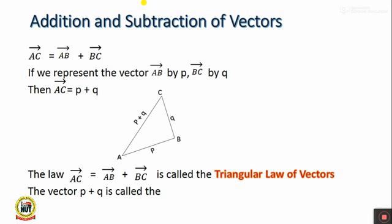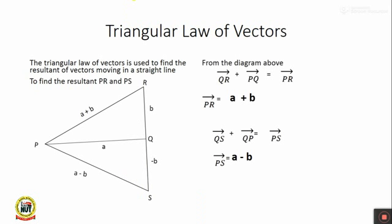More on the triangular law of vectors: it is used to find the resultant of vectors moving in a straight line. To find the resultant P,R — the longest side of a triangle represents the resultant. Since P,R is the resultant, P,Q and Q,R will sum together to give P,R. So Q,R plus P,Q equals P,R, and P,R equals A plus B in bold form. This is because P,Q is A and Q,R is B.